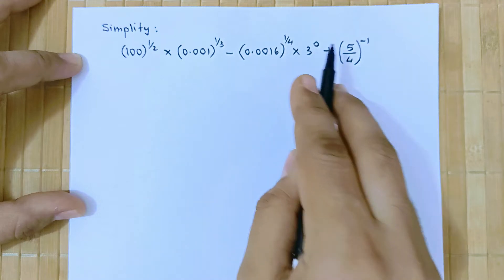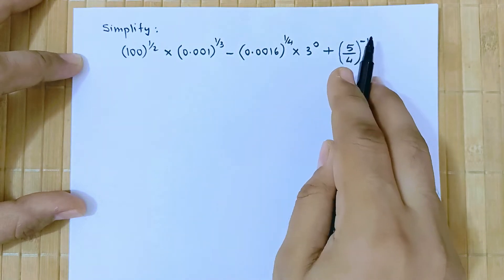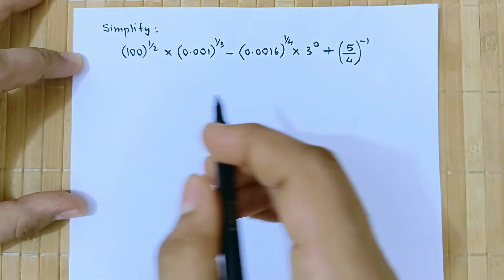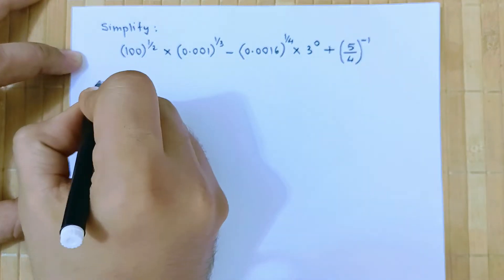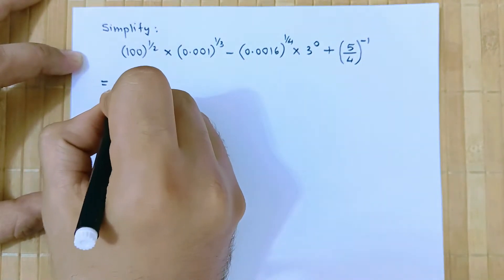So we can write this as 10 squared. So this becomes 10 squared raised to half into 0.001.